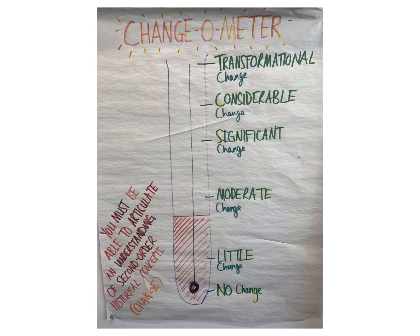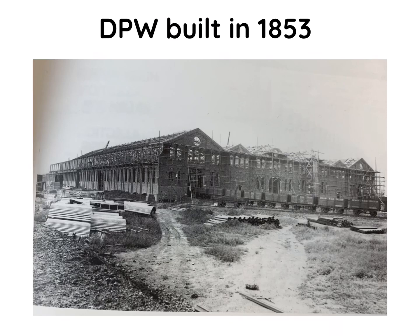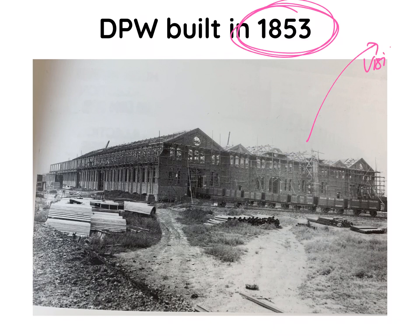Going back to the anchor chart used in the classroom, this is clearly about transformational change. In exam responses we can use phrases like 'significant and considerable change', but on a much broader basis this was a level of transformational change. The site was established in 1853, and this is where we actually visited on fieldwork — this part of the site is now being demolished, but 1853 is really important for us.